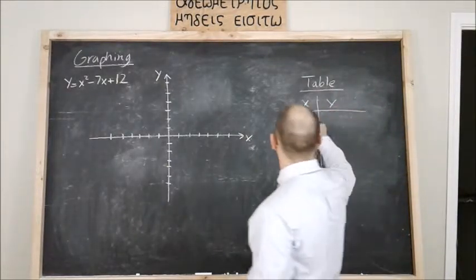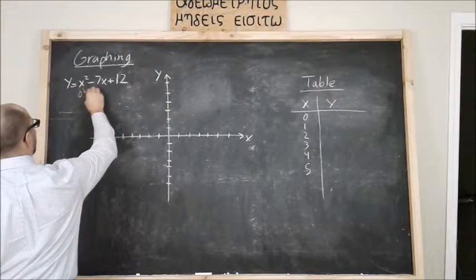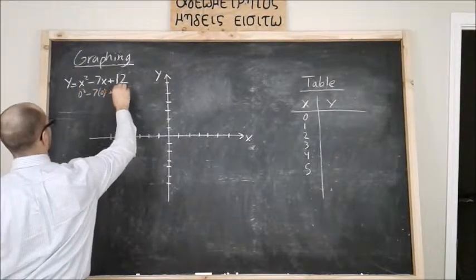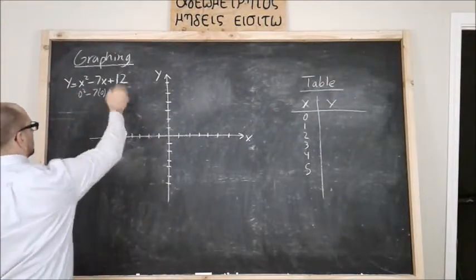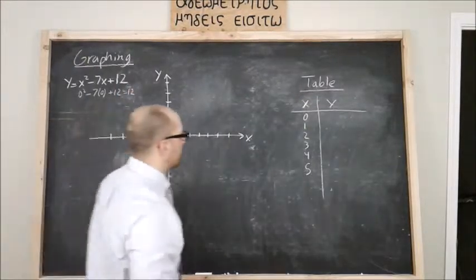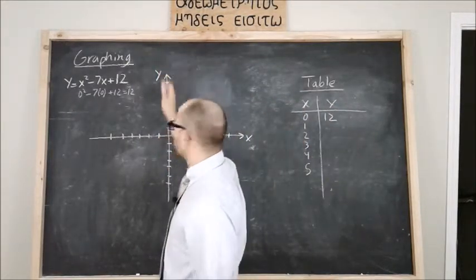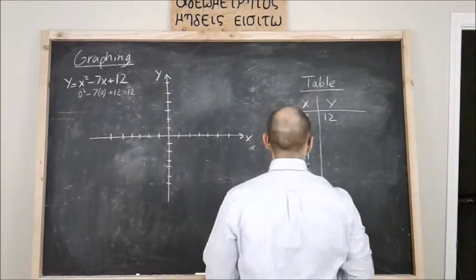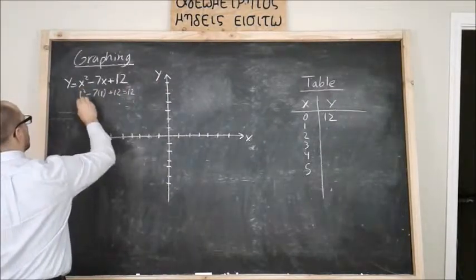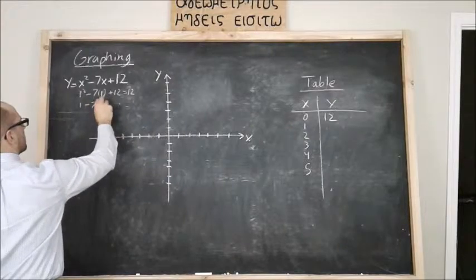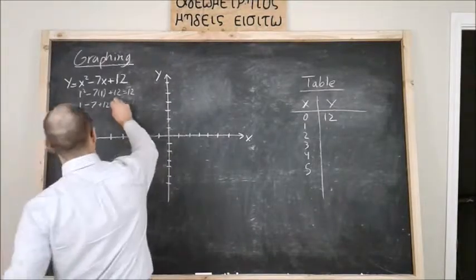Now we're just going to plug it in. So y, x is zero, that's going to be zero squared, seven times zero, plus 12. Well zero is zero, seven times zero is zero, 12 is all we have left. So zero and 12. If I plug in a one: one squared minus seven times one is seven plus 12, so minus six plus 12, that's going to equal six.